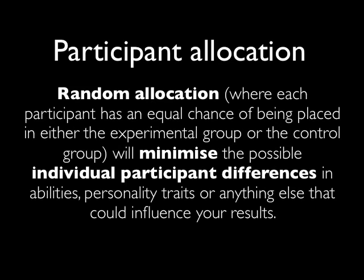Random allocation means each participant has an equal chance of being placed in the experimental or control group, whereas random sampling means each individual has an equal chance of being chosen from the total population. Random sampling is about whether they've been picked from the population to begin with, while random allocation is about whether, once in the study, they have an equal chance of being placed in either group.